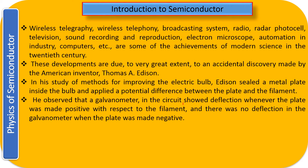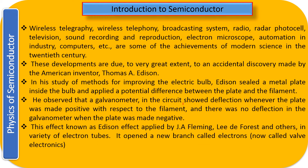He observed that a galvanometer in the circuit shows a deflection whenever the plate was made positive with respect to the filament. There was no deflection in the galvanometer when the plate was negative with respect to the filament. When the plate was connected to the positive electrode there was a deflection, and when connected to the negative electrode there was no deflection. This effect is known as the Edison Effect.